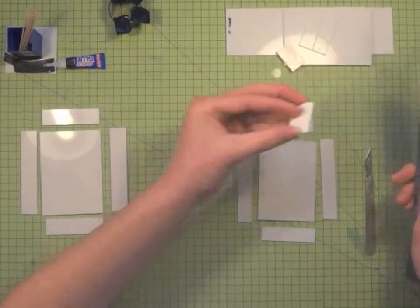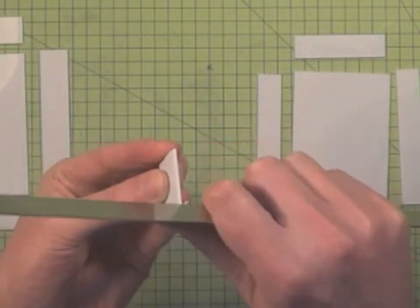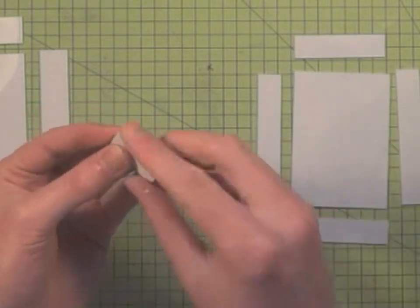And again, the same sort of rules apply in that if you're not happy with some of the edges, just run a ruler down to tidy it up and get rid of some of the excess.